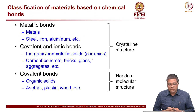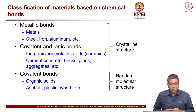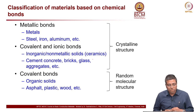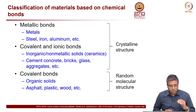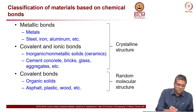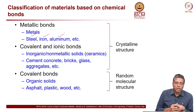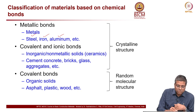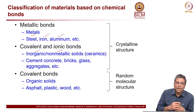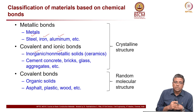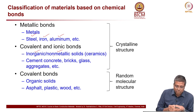Classification of materials can be done based on chemical bonds. There are three major types of bonds: metallic bond, covalent bond, and ionic bond. In metallic bonds, we find metals typically used in construction — steel, iron, aluminum, copper, etc. Covalent and ionic bonds are mainly present in most inorganic or non-metallic solids like ceramics. Concrete is one very good example of a ceramic material, along with bricks, glass, and aggregates.